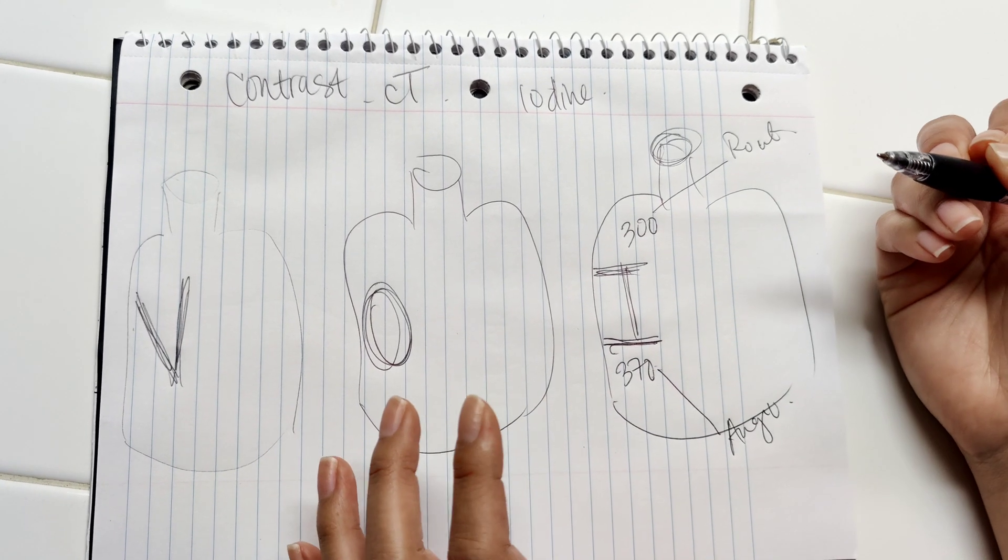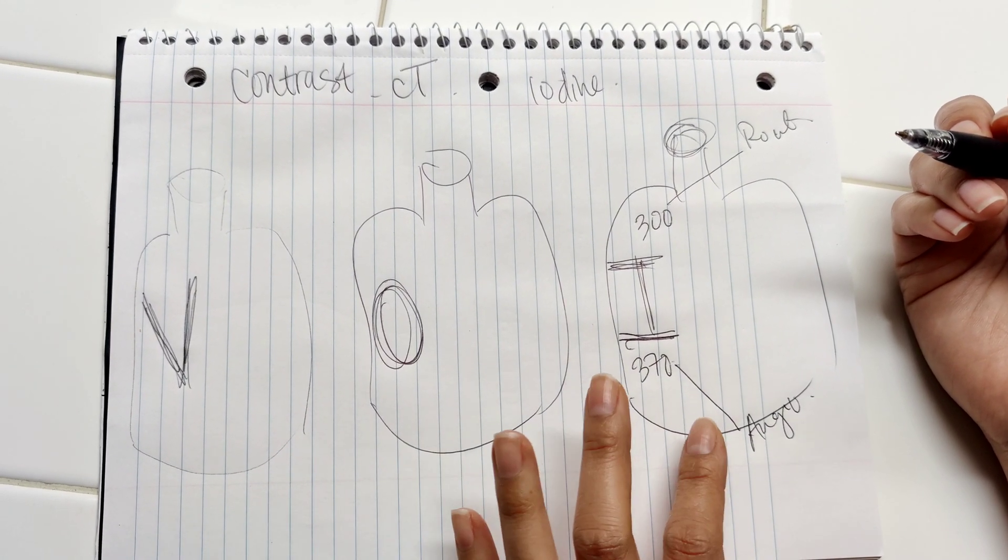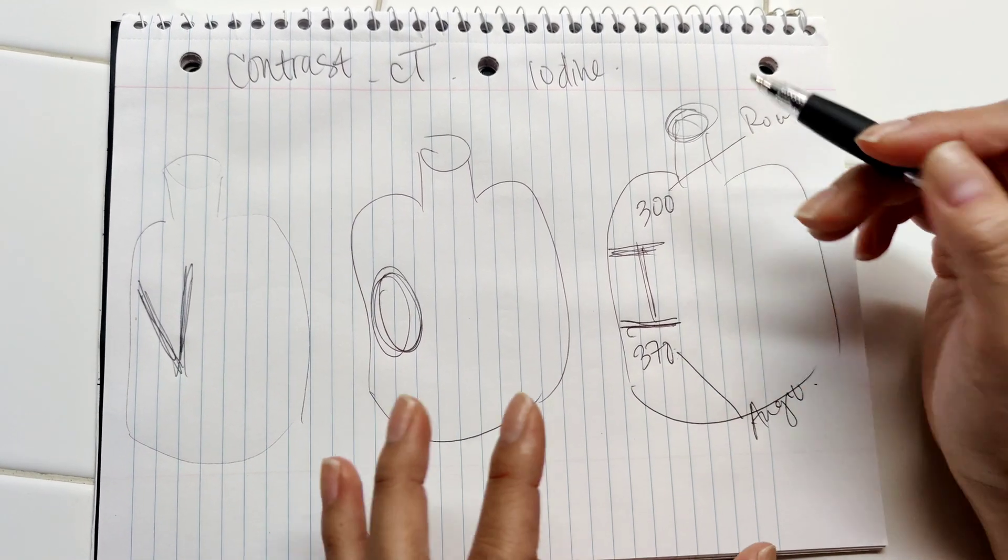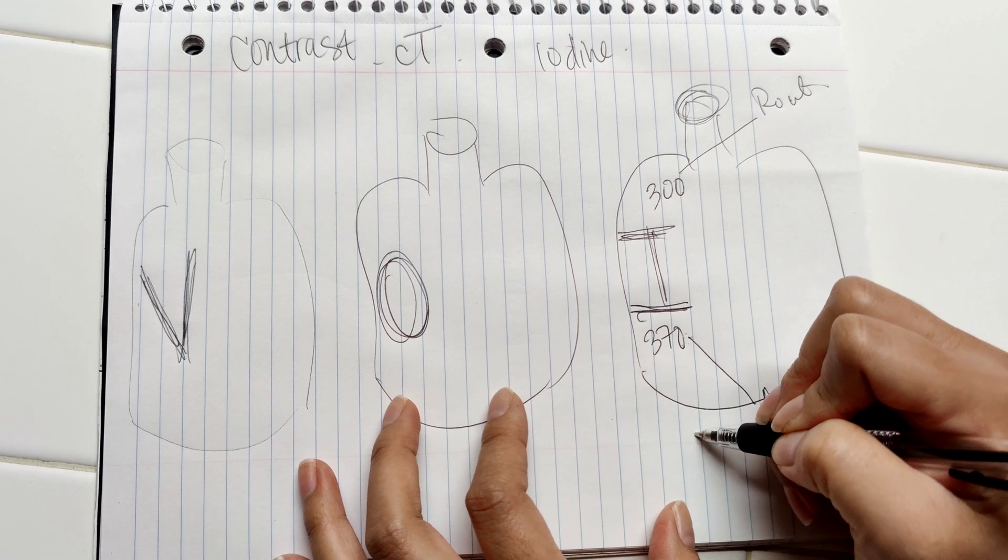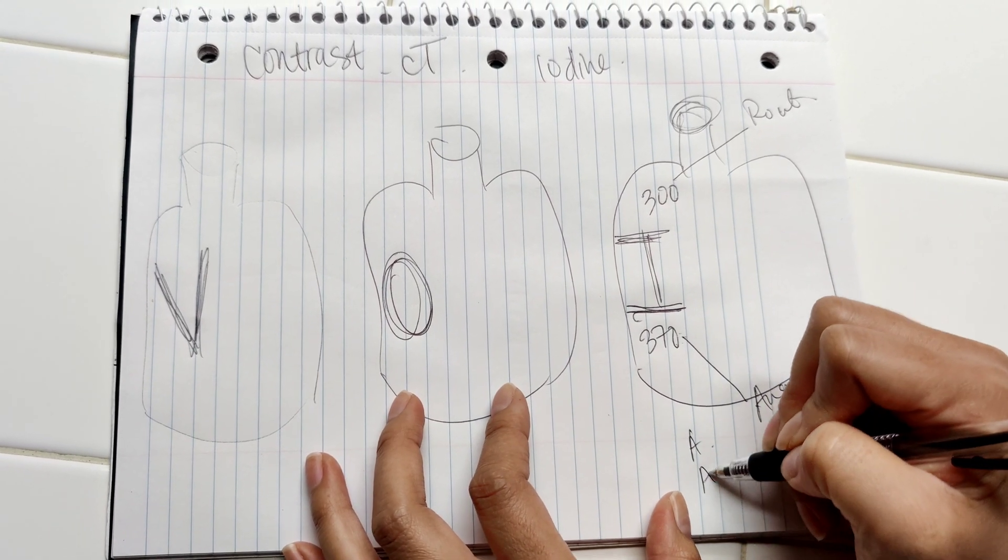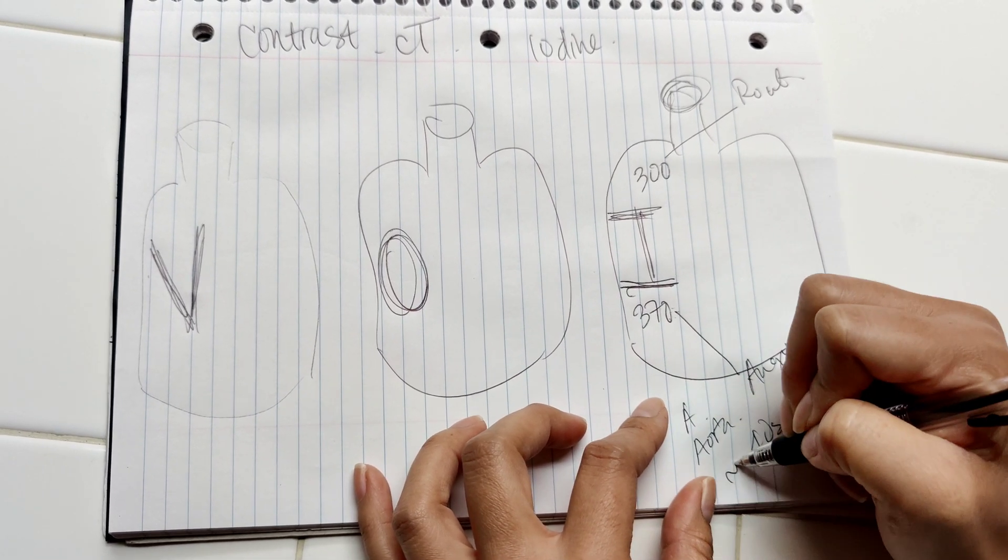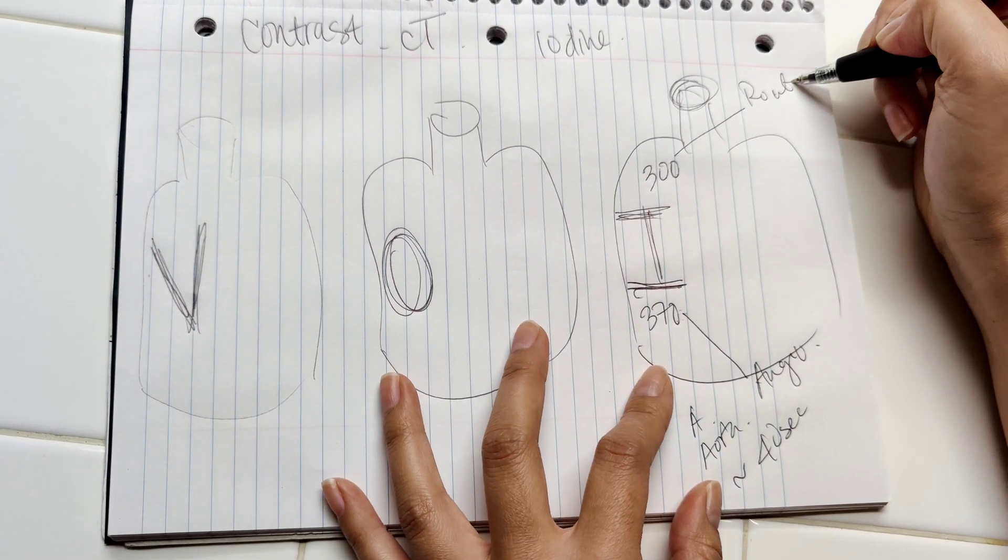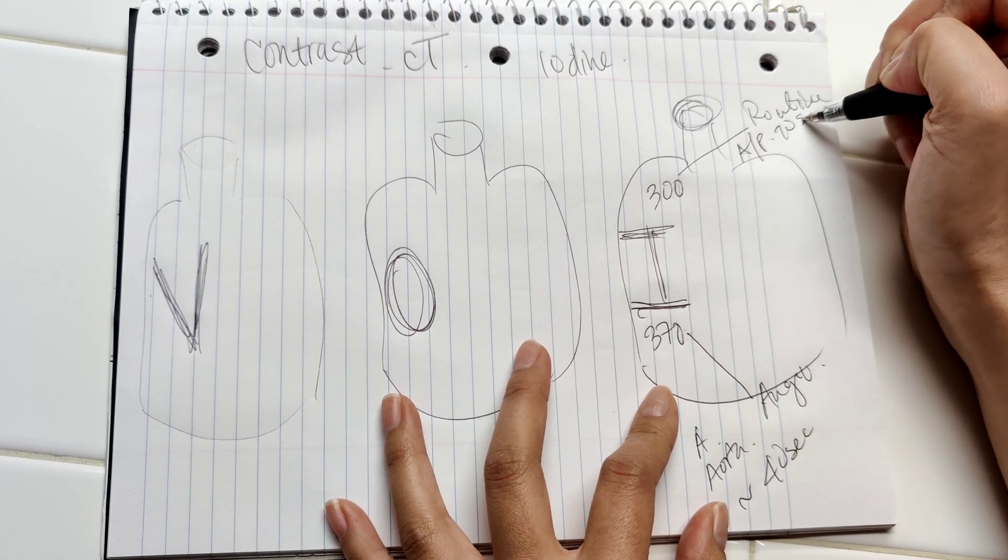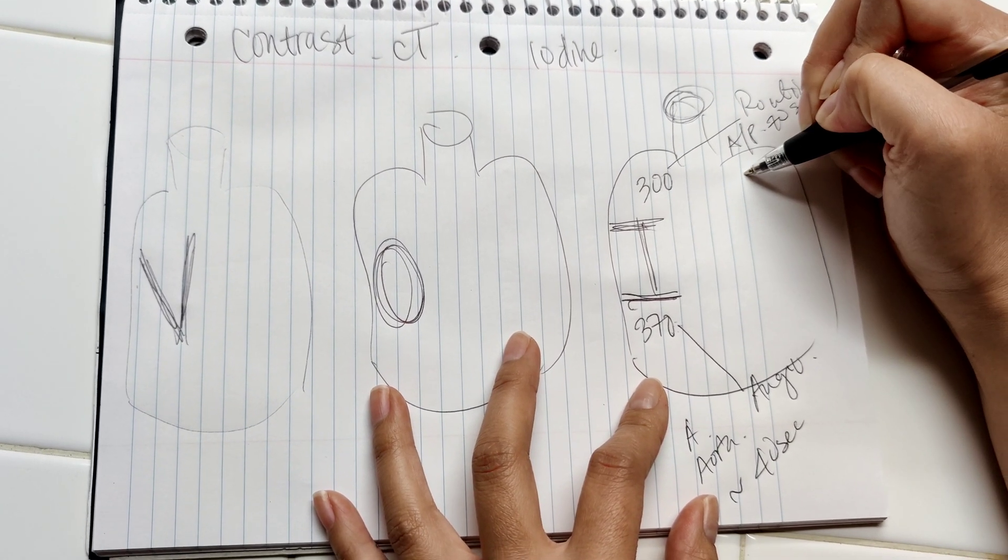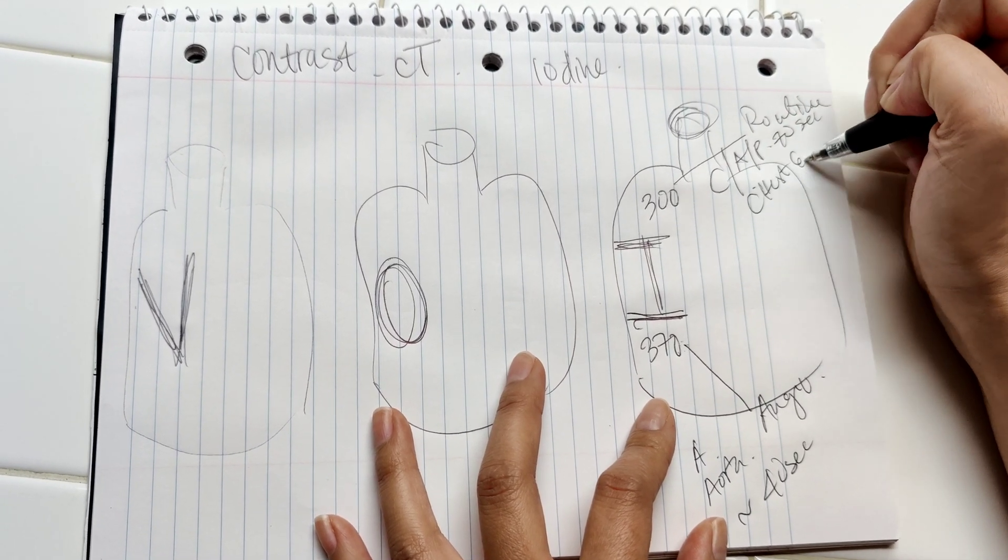So 370 is going to be more opaque versus radiolucent. So it's going to be really bright and this is going to show more vessels. So arteries, aortas, and stuff like that. This, you want to go at 40 seconds. The routine studies, you want to use for like abdomen, pelvis that are 70 seconds, or chest, abdomen, pelvis, or just a chest. That's around 60 seconds.